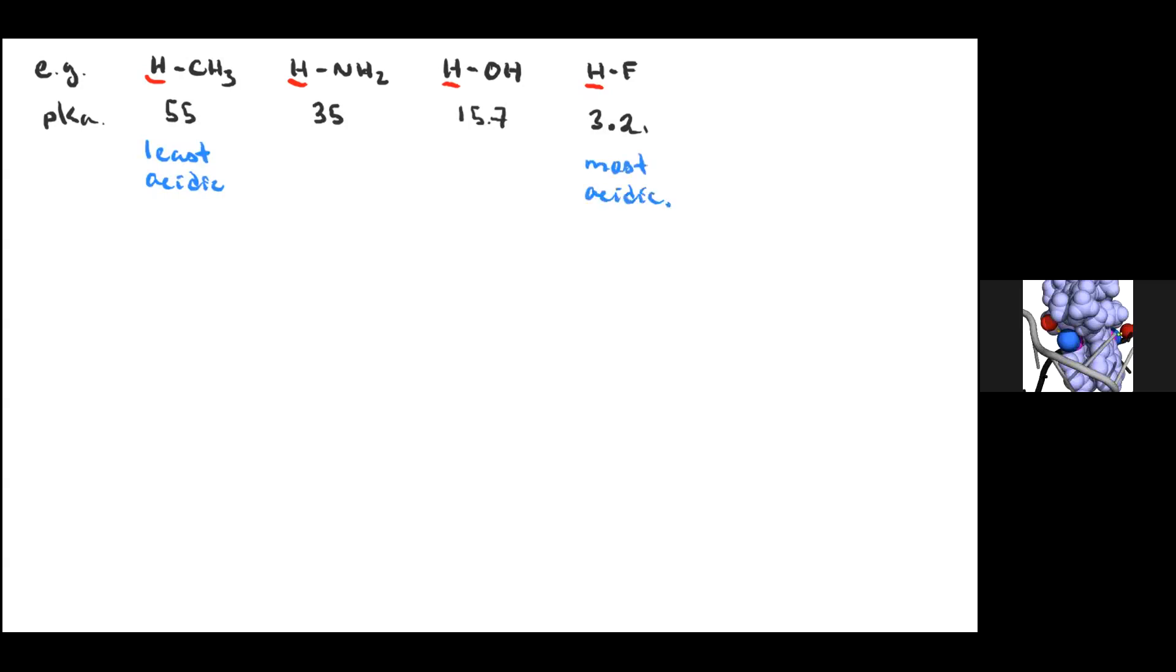And so this is the highest pKa and so it is the least acidic. And HF is going to be the most acidic. And so the conclusion is that as you move across a row from left to right, the pKa decreases as electronegativity increases.